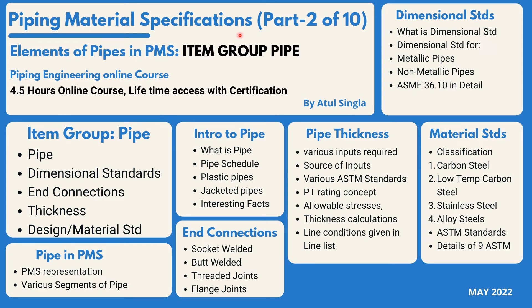This is again a very major part — understanding how to define the pipe group in PMS. We will classify and divide this section into four parts: carbon steel, low temperature carbon steel, stainless steel, and alloy steels. We will look into each section with respect to ASTM standards — all the ASTM standards associated with carbon steel, low temperature carbon steel, stainless steel, and alloy steel — so that we can understand the various parameters and how chemical and mechanical properties are defined in these ASTM standards.